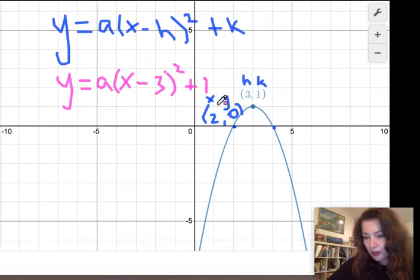I'm going to plug in the point 2, 0. I'll do that in a different color. And then we're going to solve for a, because once we know the h, the k, the x, and the y, then we only have one unknown and we can solve for the equation.